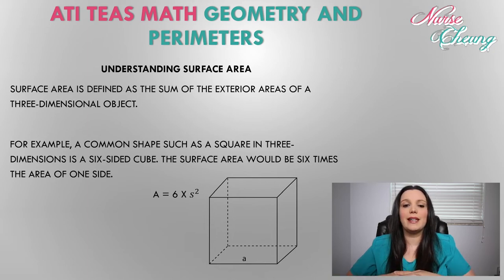The surface area would be six times the area of one side. We know that the area of a two-dimensional object for specifically a square is A is equal to s squared, but we've got six sides. So ultimately the surface area is going to be A is equal to six times s squared.